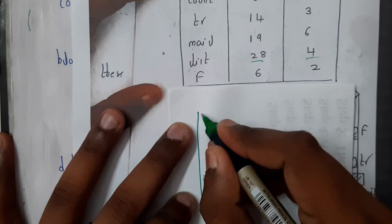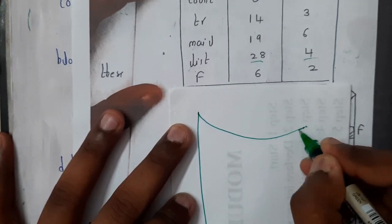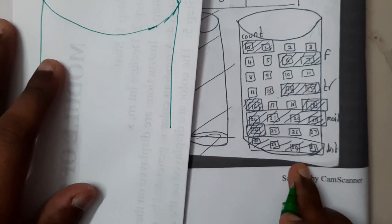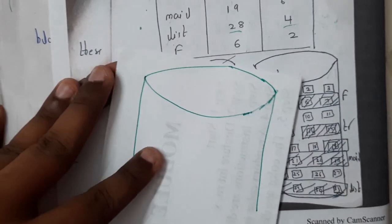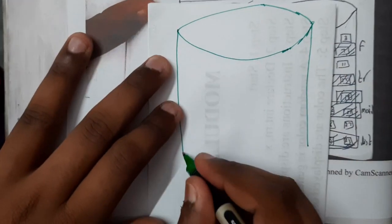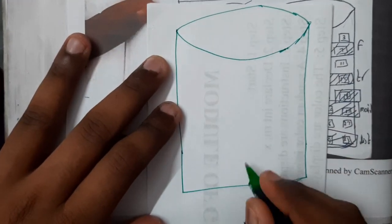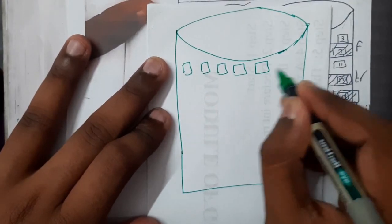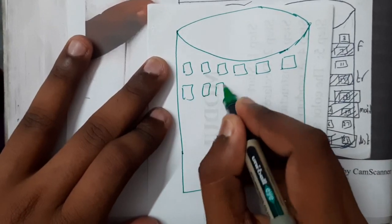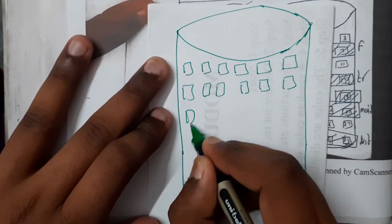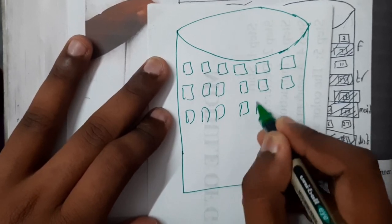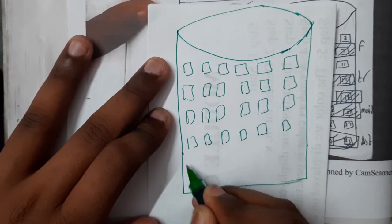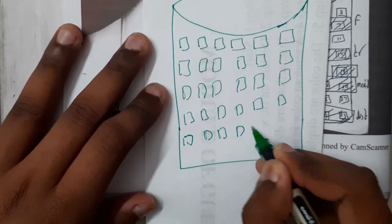Let me draw it here. I'll be drawing it a bit big so that we can manage them neatly. I'm trying to do it better here. Okay, 1, 2, 3, 4, 5, 6, 7, 8, 9, 10, 11, 12, 13, 14, 15, 16, 17, 18, 19, 20, 21, 22, 23, 24, 25, 26, 27, 28, 29...